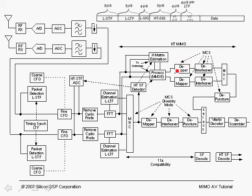After adjusting the AGC, we start decoding the high throughput long training fields, where the H matrix estimation becomes active. We compute, for example in an MMSE equalizer, the W matrix on a per carrier basis and store it such that when the data arrives, the MIMO equalizer is able to separate the two spatial streams. These are then passed through a D-mapper and D-interleaver — the D-mapper adjusted based on the decoded MCS, for example to 64QAM or QPSK. The two spatial streams after the D-interleaver are multiplexed together, passed through the D-puncture, Viterbi decoder, and D-scrambler, yielding the decoded bit stream for the high throughput case.